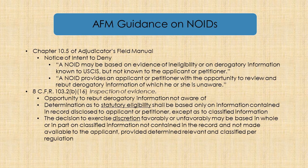The field manual also offers guidance on NOIDs. A NOID may be based on evidence of ineligibility or on derogatory information that USCIS has but that the applicant and you as the applicant's lawyer are unaware of. The NOID provides the applicant the opportunity to review and rebut that derogatory information. A determination as to statutory eligibility should really be based on information disclosed to the applicant, unless classified. But with discretion, a decision could be based in whole on unclassified information not in the record.